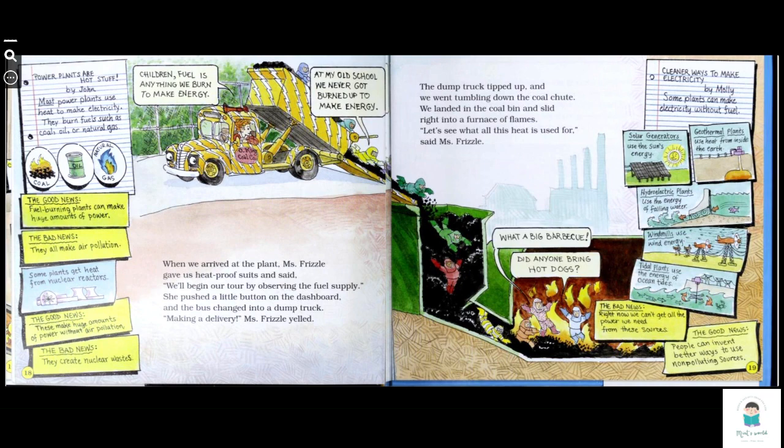Power plants are hot stuff. Most power plants use heat to make electricity. They burn fuels such as coal, oil, or natural gas. The good news: fuel burning plants can make huge amounts of power. The bad news: they all make air pollution. Some plants get heat from nuclear reactors. The good news: these make huge amounts of power without air pollution. The bad news: they create nuclear waste.